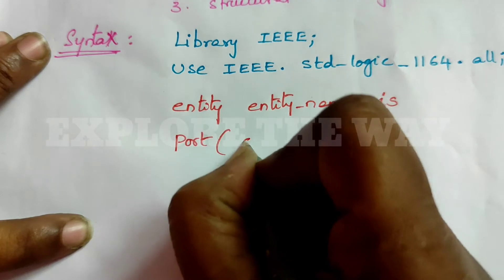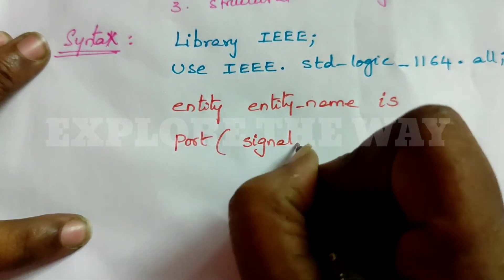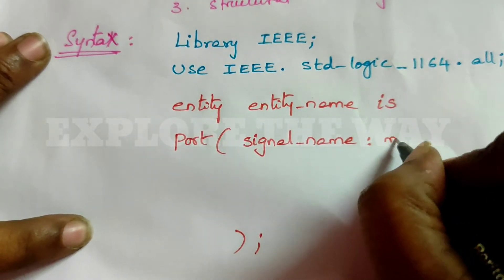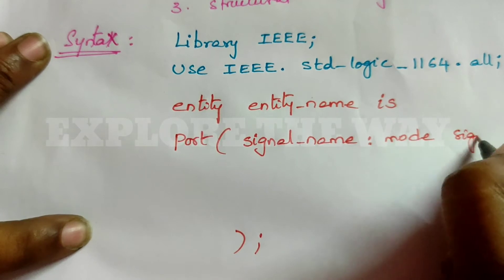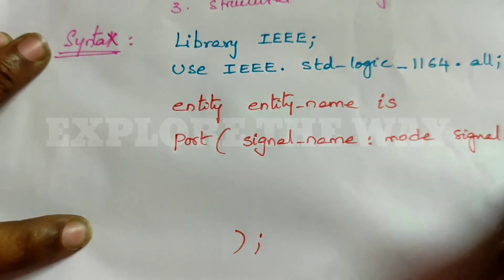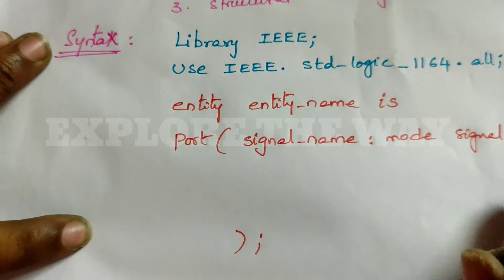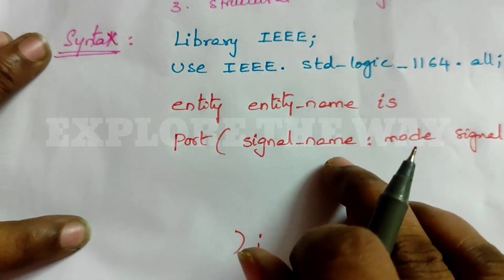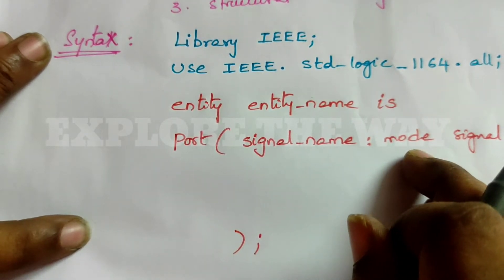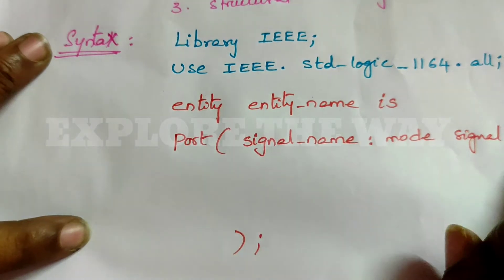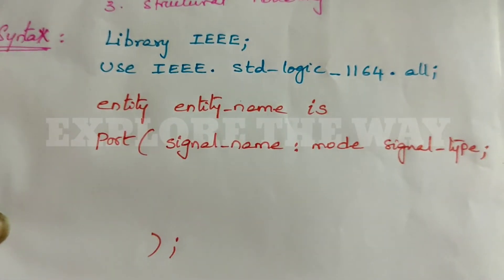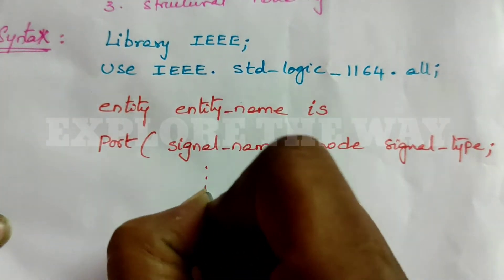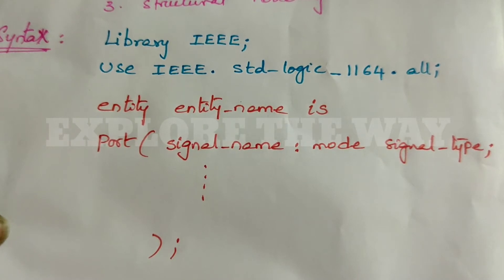For each port, you write the signal name, then the mode (direction), then the signal type. For example, suppose the port name is 'in1' — you write: in1, direction 'in', then the signal data type. Like this, you can declare all the input and output signals.